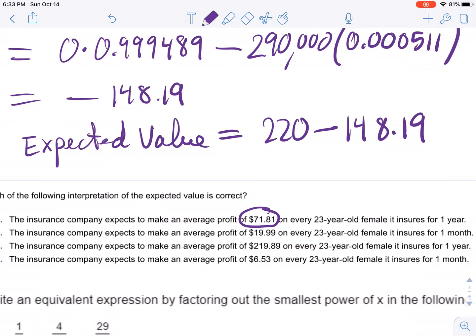However, this is the interpretation. The insurance company expects to make an average—keyword average—profit of $71.81 on every 23-year-old female it insures for one year. And that's it.